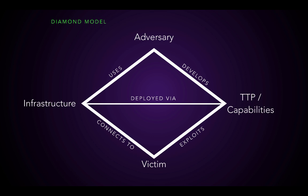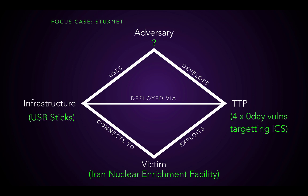So you had to be at the facility in order to actually get it infected, and so they were put on USB sticks. We know who the victim is, so now we can start filling in these gaps. The TTPs — the techniques, tactics, and procedures — were four different zero-day vulnerabilities. The target was specific ICS units that Siemens made, those were put on a USB stick, and the victim is the Iranian nuclear enrichment facility.